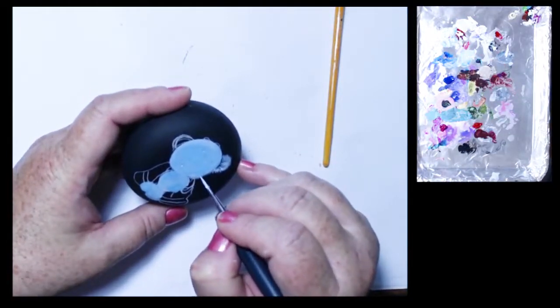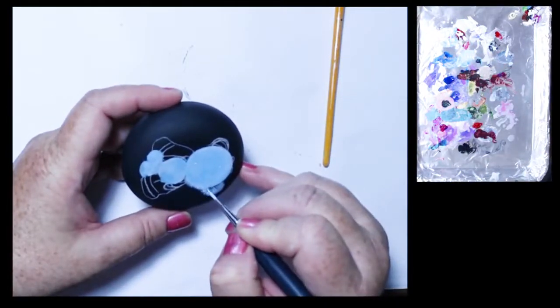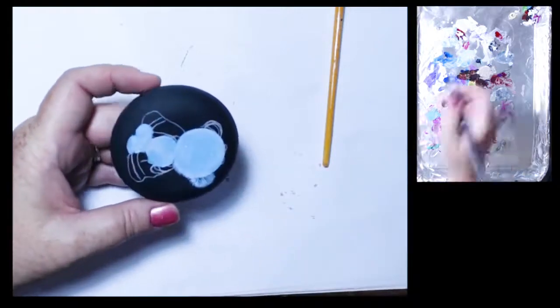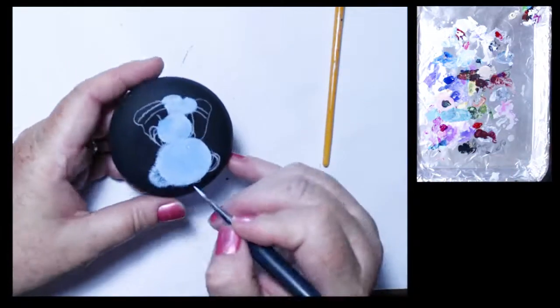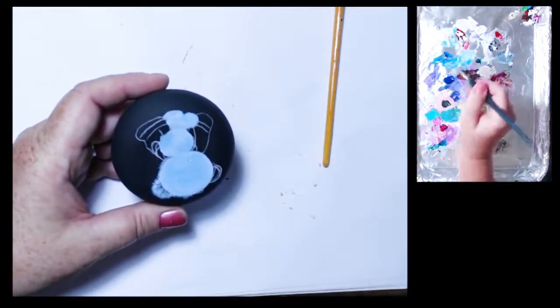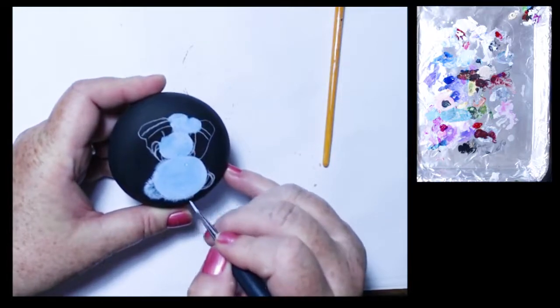Little fine lines that make up, and you don't have to do the inside of the body you just have to kind of do the outside where it meets the black to indicate that he's got this shaggy fur.